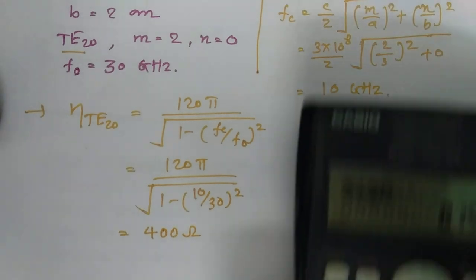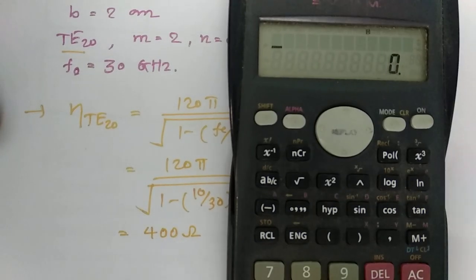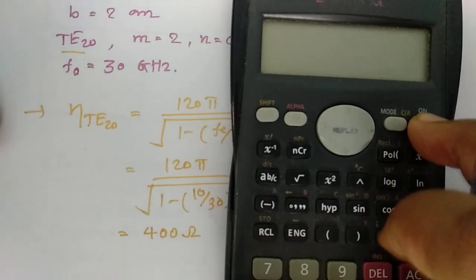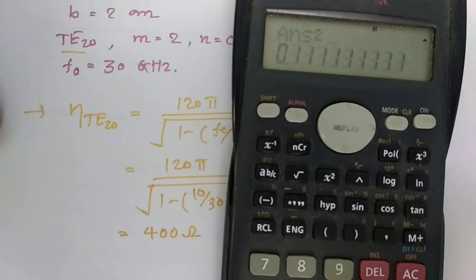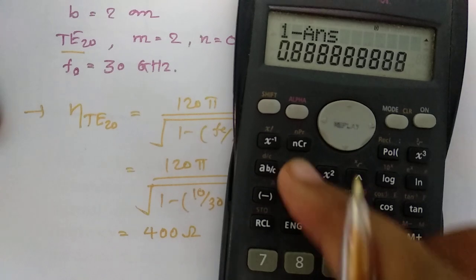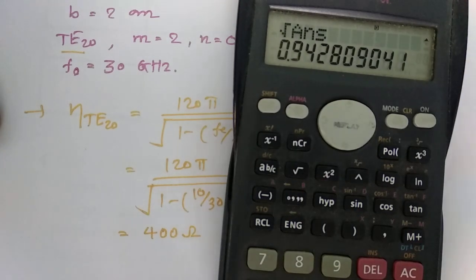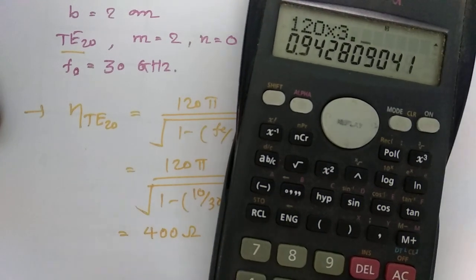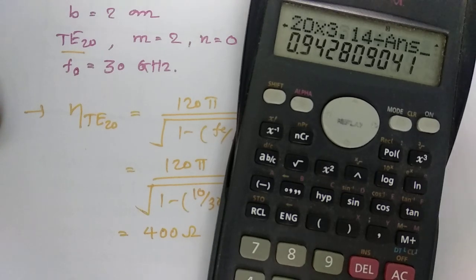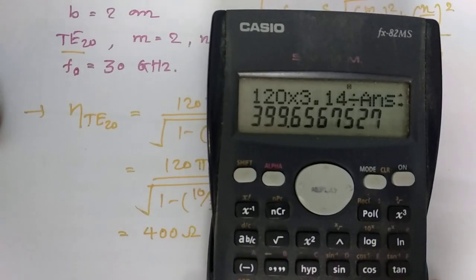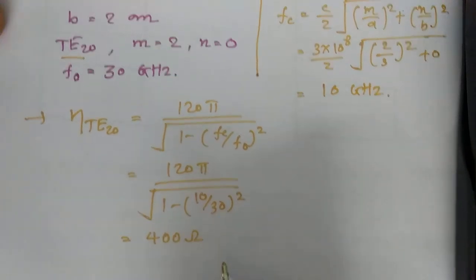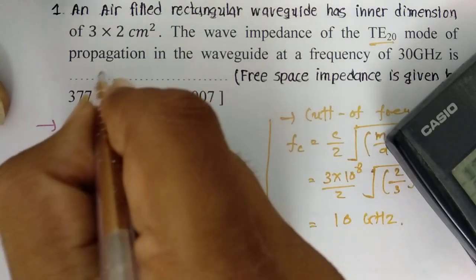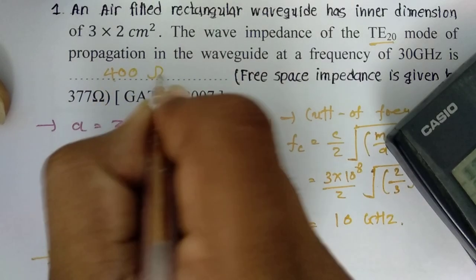We can cross-verify this: √(1 − (10/30)²) gives us 120π divided by that value, which equals approximately 399.65. So we can say the answer is approximately 400 Ω.